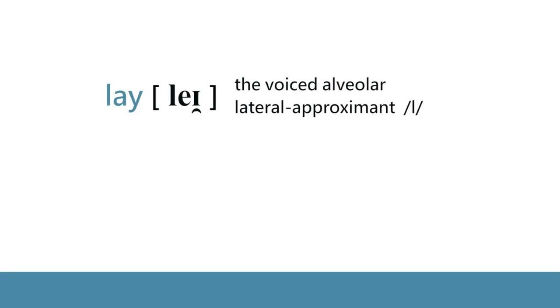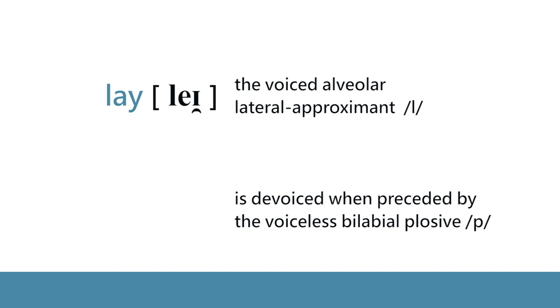For example, the alveolar lateral approximant in English, /l/, which is voiced, is devoiced when preceded by the voiceless bilabial plosive in words like 'play.' This is how you transcribe 'play.' If you want to provide a narrow transcription, you have to put this empty dot, the zero thing below /l/, to indicate that /l/ is devoiced in this environment.